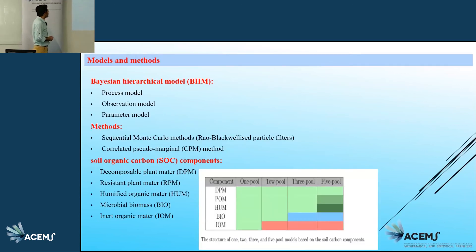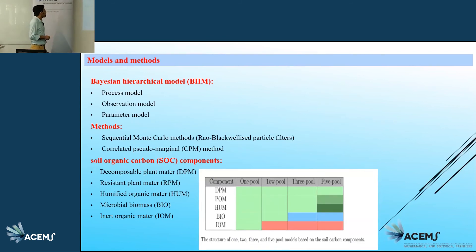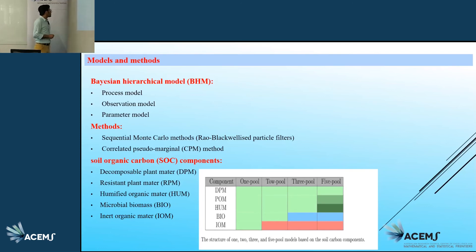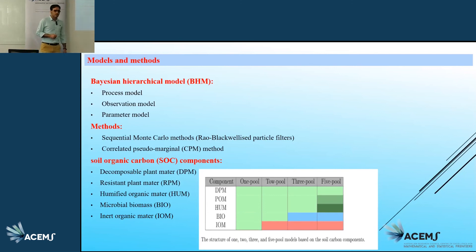To this end, our model is a Bayesian hierarchical framework. We estimate our unobservable state variables in our process model through a Rao-Blackwellized particle filter, and we estimate our parameters in our parameter model through the correlated soil marginal method. We also compared several soil organic carbon models, from the simplest one — a one-pool model — to a more complex one, which is a five-pool model.